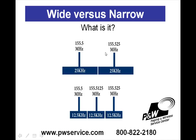It prevents a pager on one frequency from picking up another pager on the adjacent frequency. What narrowband does is add an additional channel in between, and it reduces the bandwidth of the transmitter from 25 kHz down to 12.5 kHz.